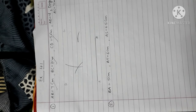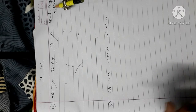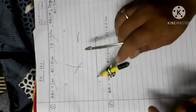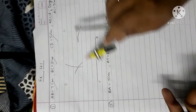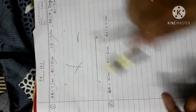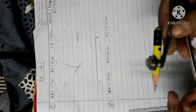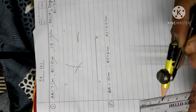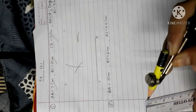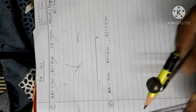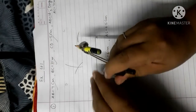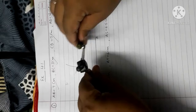Now we make a diagonal. AC equals to 7 cm. Diagonal — which is what we call a diagonal. So again open your compass to 7 cm and cut from A to C.